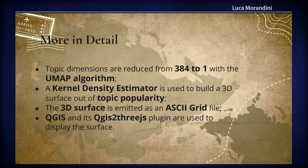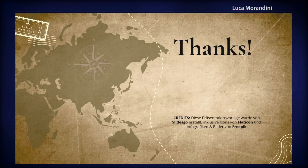How did we do it? We reduce the dimensionality from 384 to 1 using UMAP, then use a kernel density estimator for the surface, and then we use QGIS — specifically QGIS 3D — to do the visualization. And that's all.